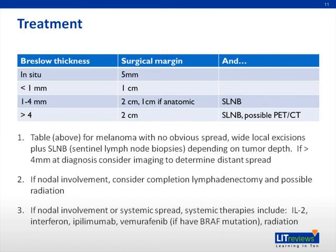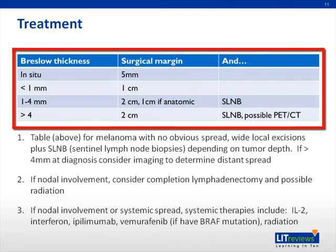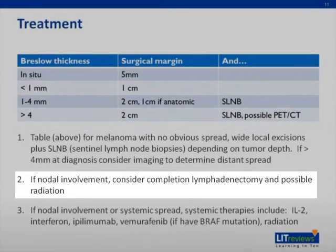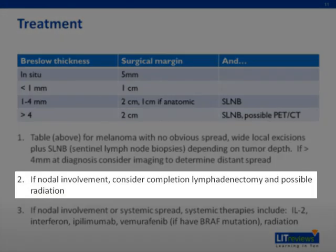For lesions less than 4 millimeters in Breslow thickness, surgery with wide local excision is recommended. This table lists the generally acceptable surgical margins depending on the tumor thickness. In some cases, sentinel lymph node biopsies, which identify the lymph node that is draining the tumor, are recommended. Thick tumors and other worrisome features may also prompt sentinel lymph node biopsy. For tumors greater than 4 millimeters in thickness, whole body imaging with PET CT scans is often performed to evaluate for any metastatic disease. In the event of tumor noted in the sentinel lymph node, palpable lymphadenopathy, or radiographic disease in the lymph nodes, complete lymph node dissection has historically been recommended.